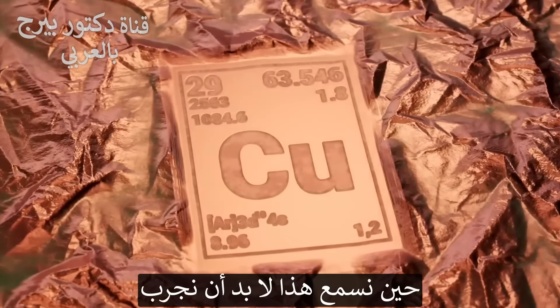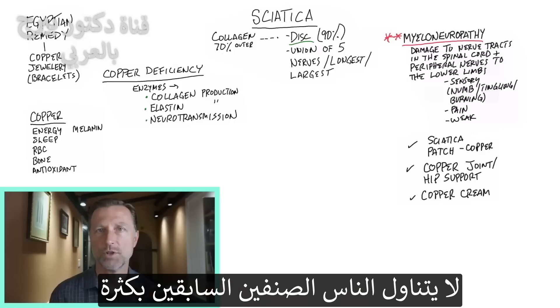Copper is essential for collagen, and it also makes up part of the vitamin C complex in nature. We have copper for collagen, connective tissue, and the nervous system. Certain parts of your brain have very high levels of copper. Regarding dopamine — this is why there's usually a copper deficiency when a person has Parkinson's involving dopamine, which connects to the nerve-muscle connection. Copper is also involved in making energy, helping you sleep, making melanin which helps prevent graying of the hair, red blood cells, formation of bone, and it's an antioxidant.